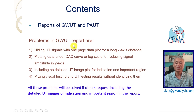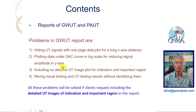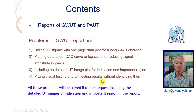Problems in the GuideWave reports are: first, hiding UT signal with a one-page data plot for long x-axis distance; second, plotting data under a curve or log scale for reducing signal amplitude in y-axis; third, including no detailed UT image plot for indication and important regions; fourth, mixing visual testing and UT testing results without identifying them.